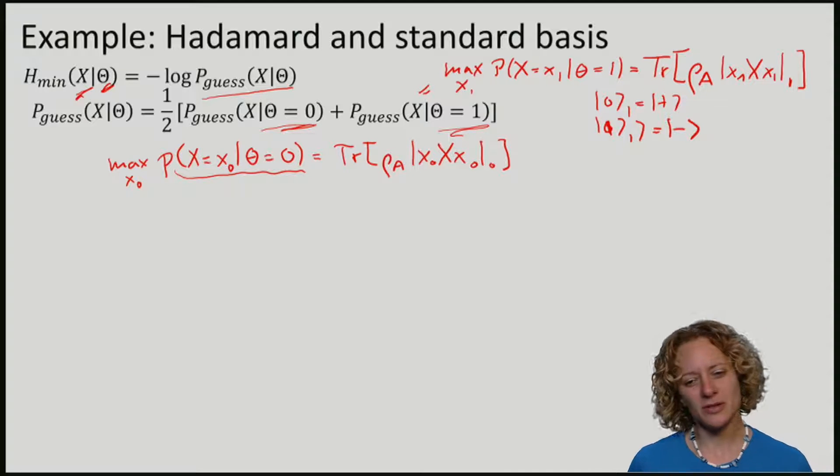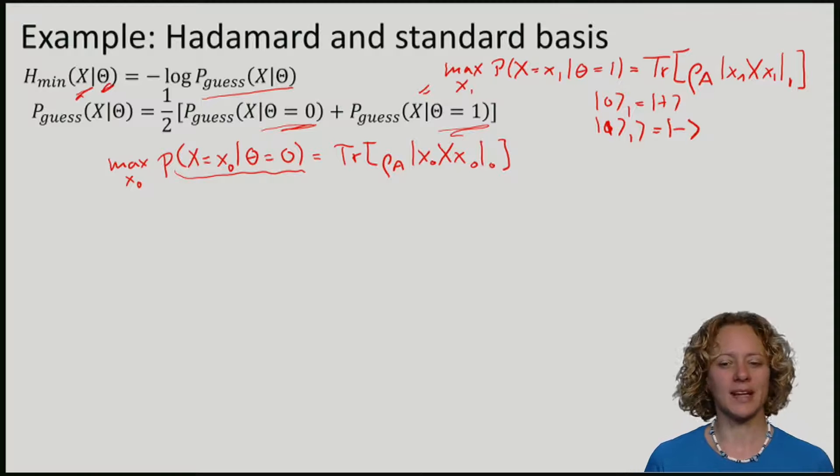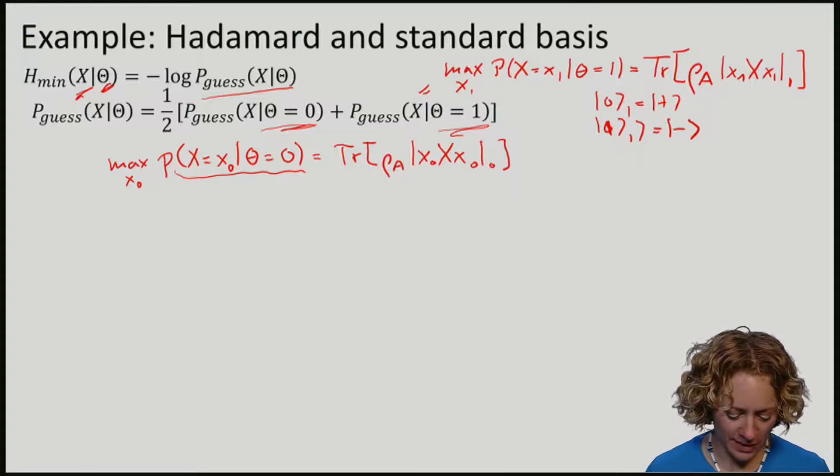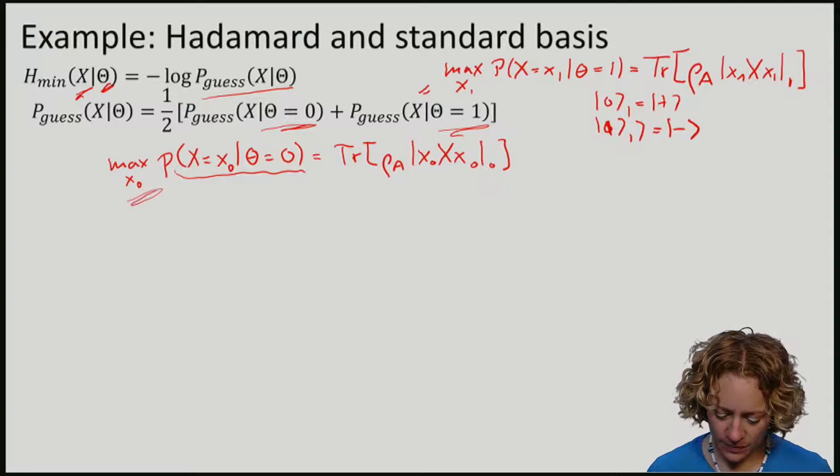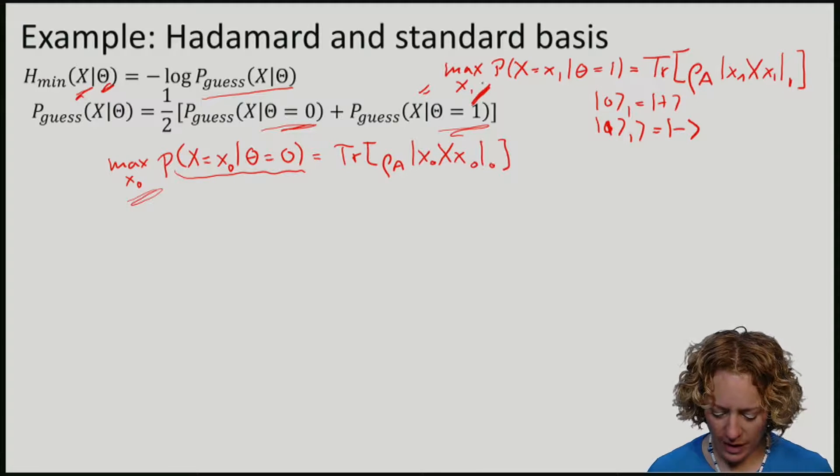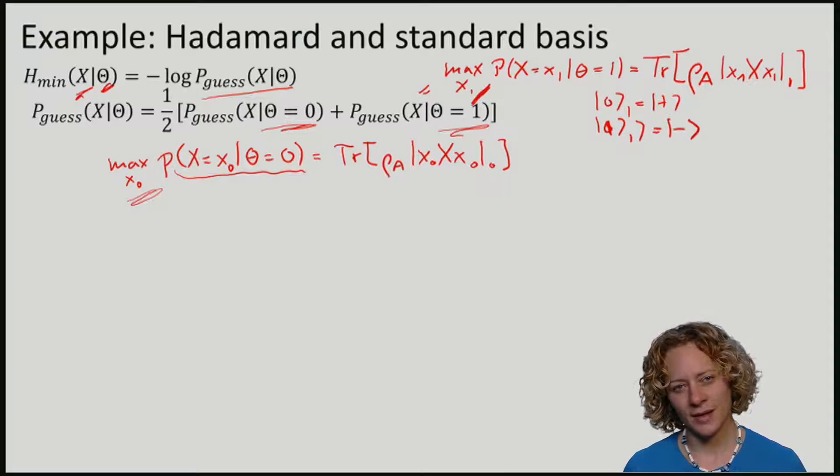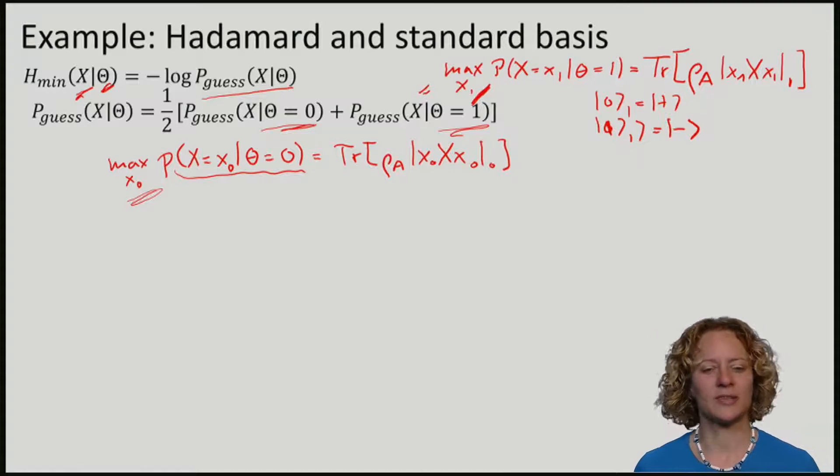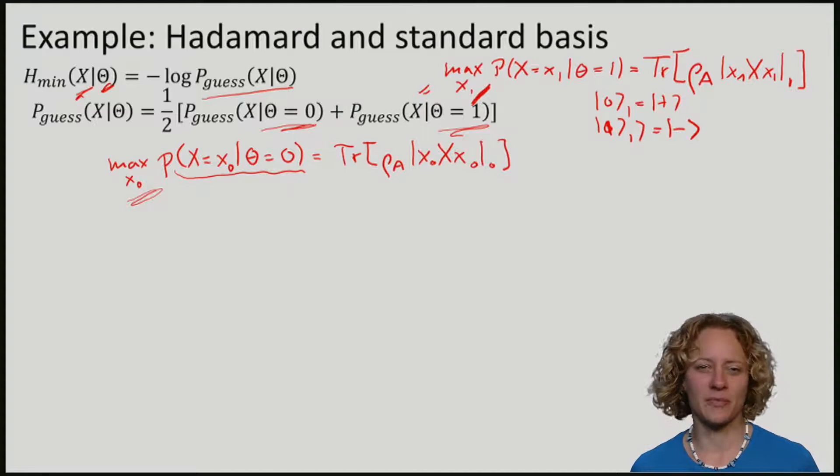So we now want to compute the overall guessing probability, where we maximize over X0 and X1. To compute this, let's now consider all pairs of measurement probabilities.